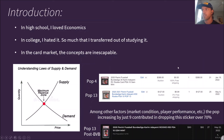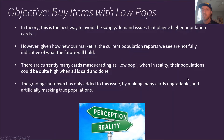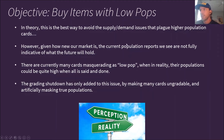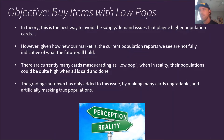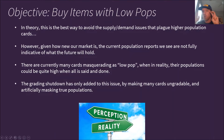Your objective is to buy items with truly low pops — not 'low pop being graded' but low pop meaning there aren't that many of these things out there. In theory this is the best way to avoid the supply and demand issues plaguing higher population cards. However, given how new our market is, current population reports are not fully indicative of what the future will hold. There are currently many cards masquerading as low pop when their populations could be quite high once all is said and done.